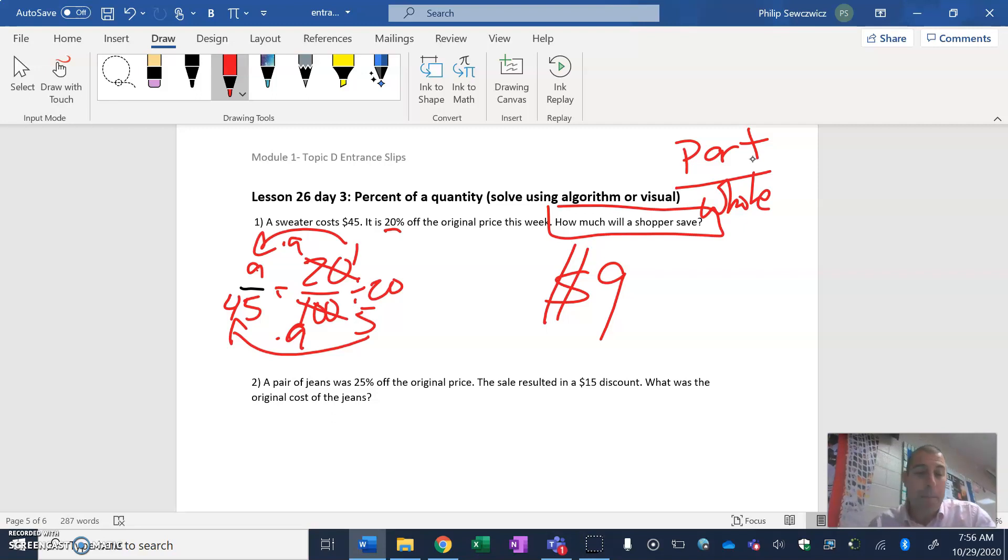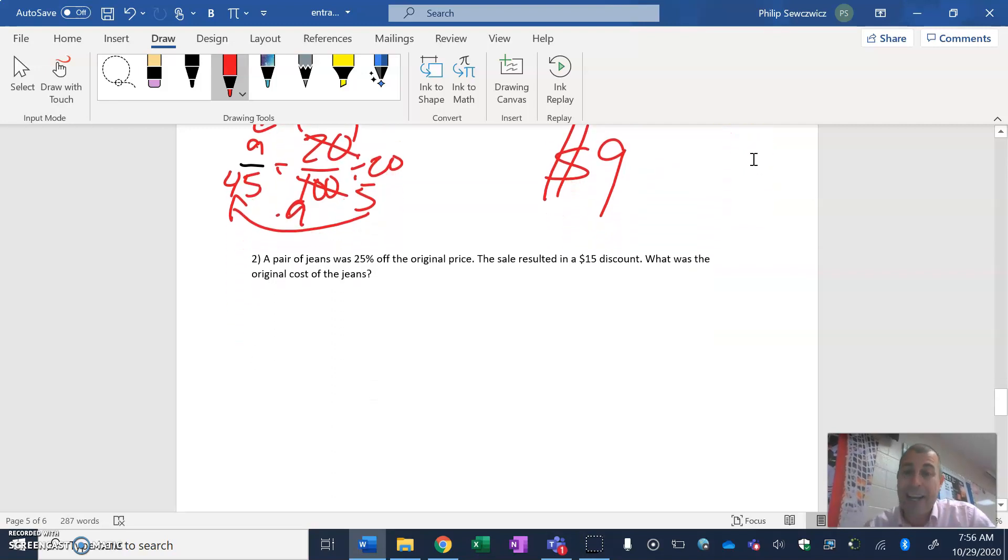Let's go on to question number 2. A pair of jeans was 25% off the original price. The sale resulted in a $15 discount. What was the original cost of the jeans? Again, fraction bar equals fraction bar. 100 in the lower right-hand corner. Percent is always out of 100. Now the $15, that was the discount. So that's not the whole price, that's just the part we get to take off the price.